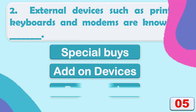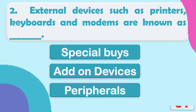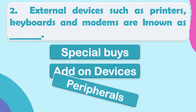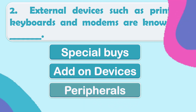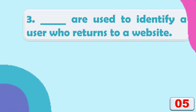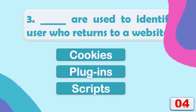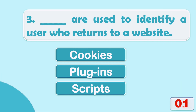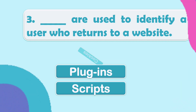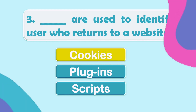The correct answer is Option C: peripherals. Cookies are used to identify a user who returns to our website. The correct answer is cookies.